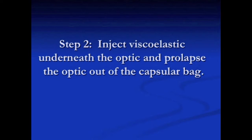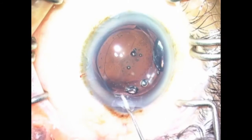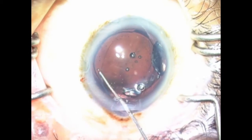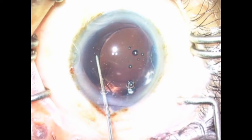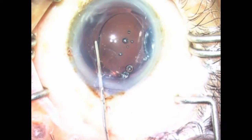Step 2. Inject viscoelastic underneath the optic and prolapse the optic out of the capsule or bag.